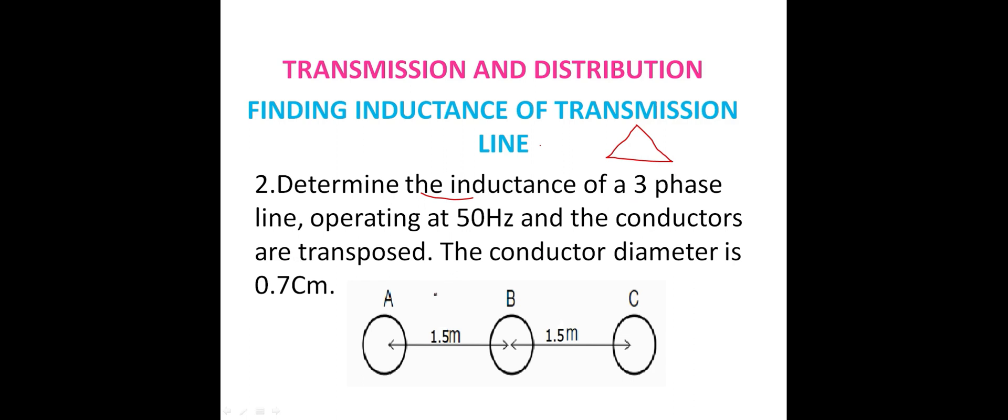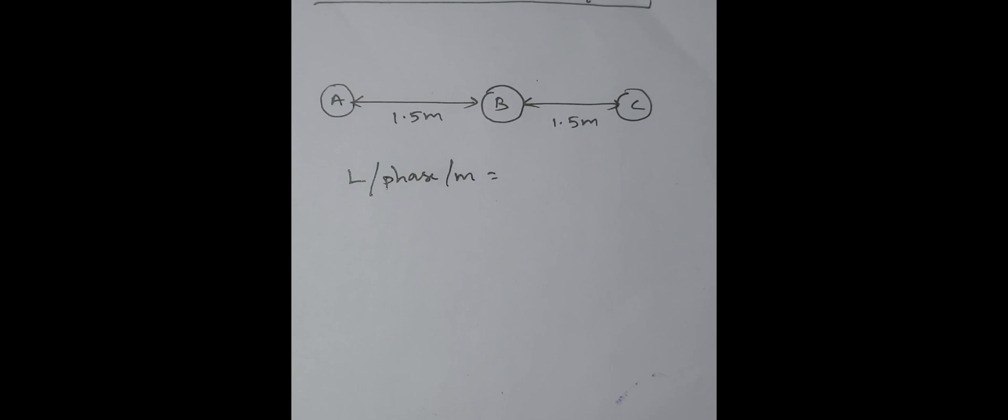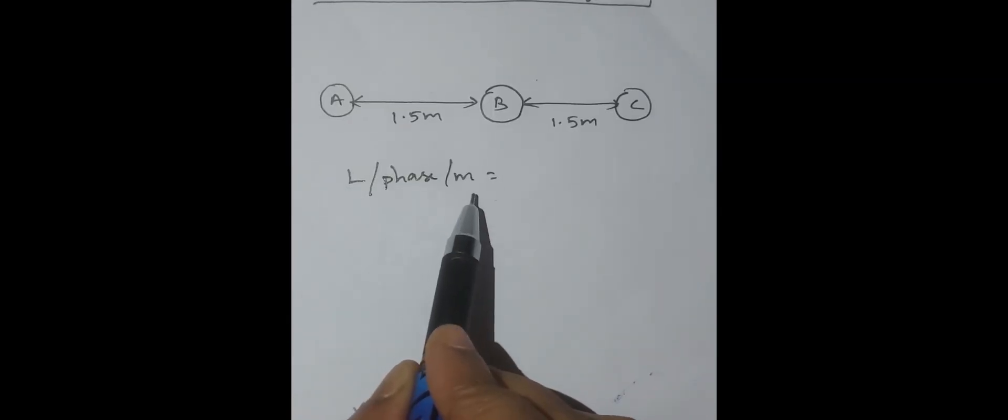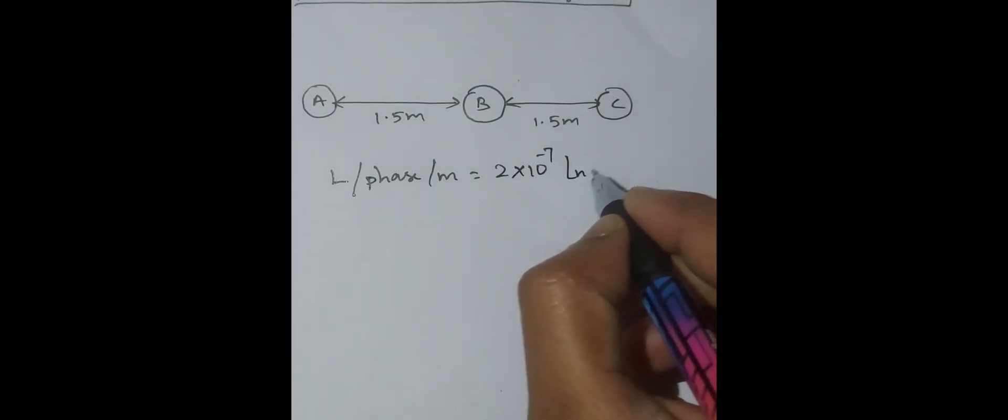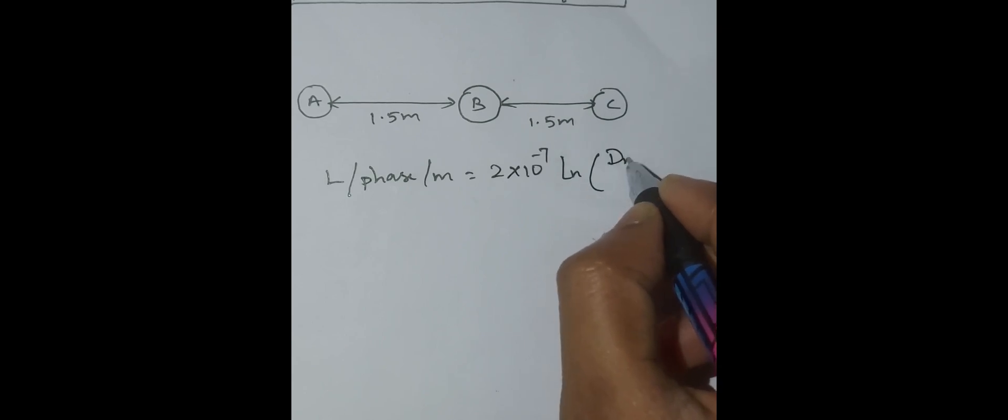We know the formula already and the conductors are transposed, the conductor diameter. As I already told in the previous problem, it is given as radius directly, but here it is given as diameter. So you have to convert this into radius and substitute in the same formula.